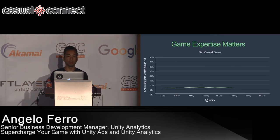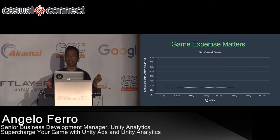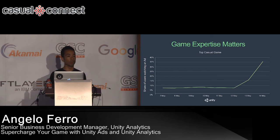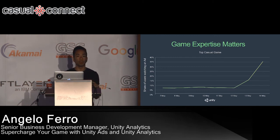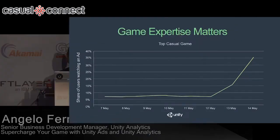Here's an example from a popular casual game. When they first showed ads, less than 10% of the audience was opting in, because the ad was placed poorly — it didn't fit with the storyline. By leveraging Unity Ads expertise, they redid the placement, and almost overnight the number of people opting in increased from 10% to 35%, because the ad was strategically placed at the right point at the right time.